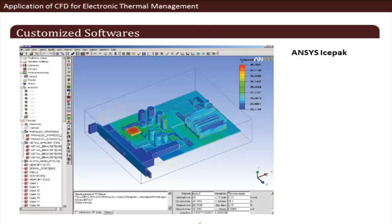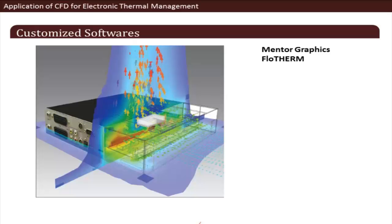General-purpose CFD codes can model electronic thermal management problems, but there are also customized codes specifically designed for this purpose. ANSYS Icepak is one popular tool that uses built-in electronic component models to compile system-level, cabinet-level, or device-level models and is user-friendly from an electronics specification standpoint. FloTHERM by Mentor Graphics is another popular tool that similarly uses electronic component-level models to customize CFD simulations from an electronics perspective.